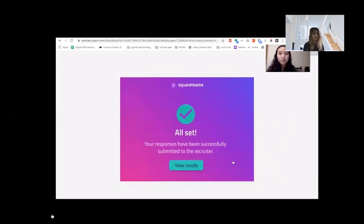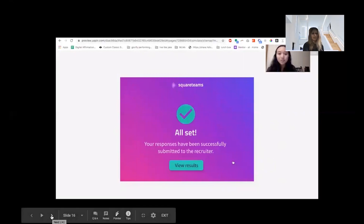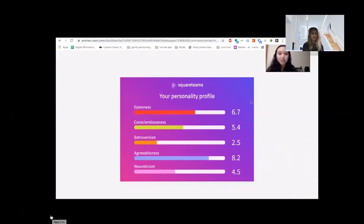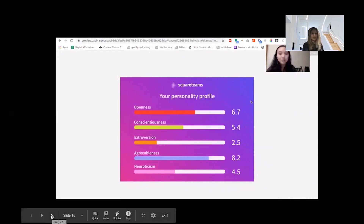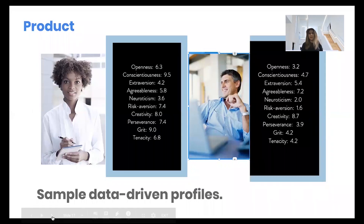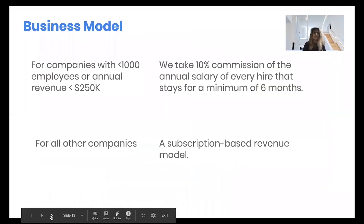The results from our assessment will be sent to the recruiter, who will be able to see the assessment ranking of different personality traits of the applicant. Based on which values the company prioritizes, the company will be able to find better matches for their team. Here are some sample data-driven profiles — the top five are the Big Five personality traits, and the lower five are things we can pick up using augmented reality and virtual reality simulations, such as grit and perseverance.